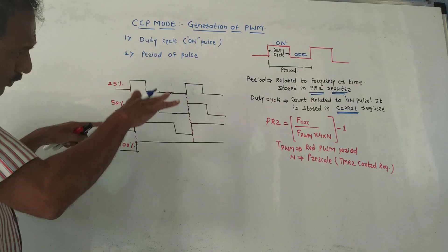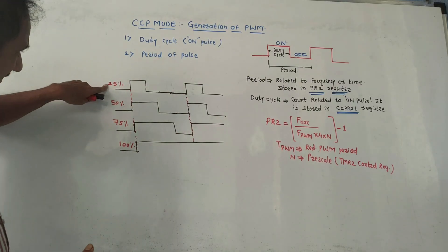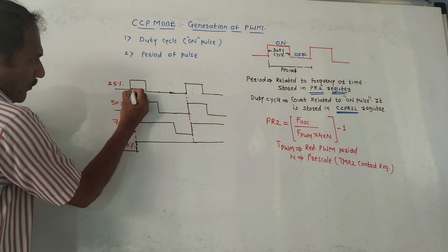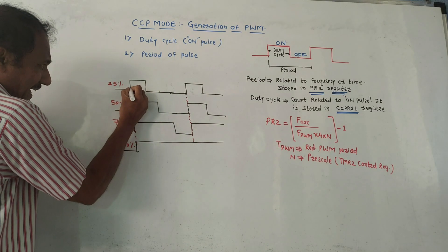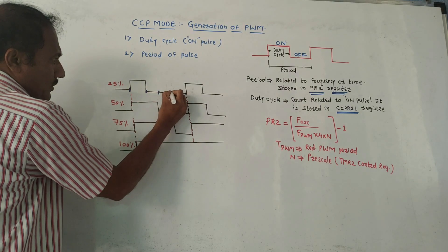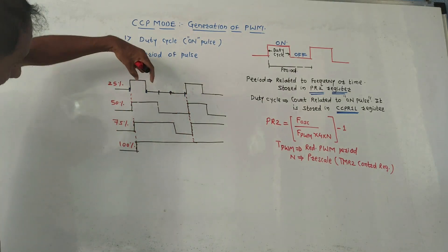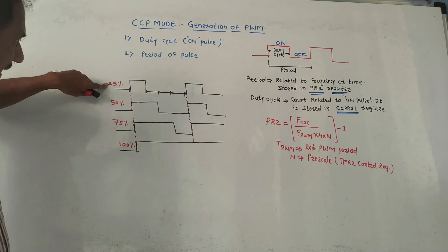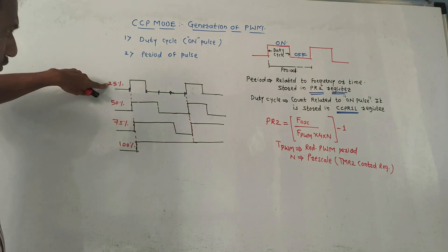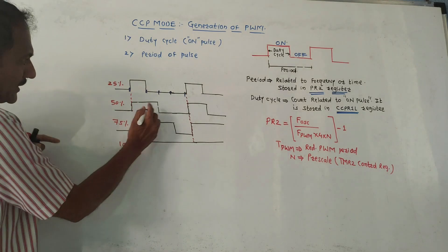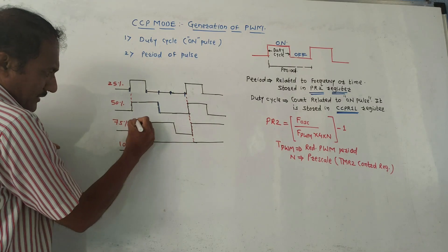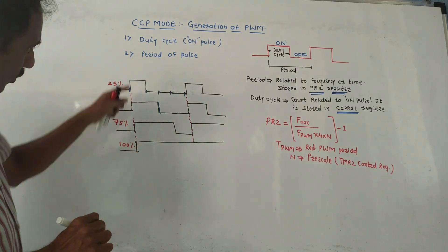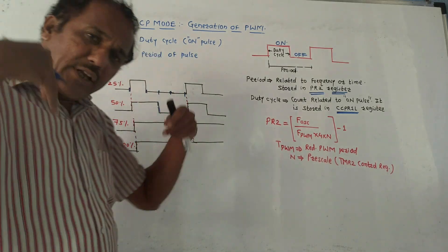Different duty cycle waveforms can be generated. For example, if we want a waveform of 25% duty cycle, we divide the waveform into four parts — the on-pulse occupies only one-fourth. So the on-pulse duration is 25%. Second, duty cycle of 50% — the on-pulse is half. Third, 75% duty cycle. Fourth, 100% duty cycle. According to the requirement, we can generate any required waveform.